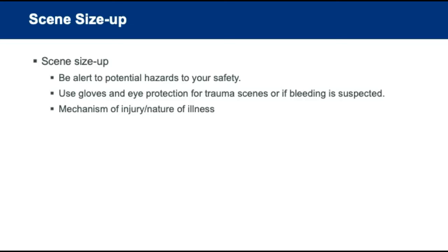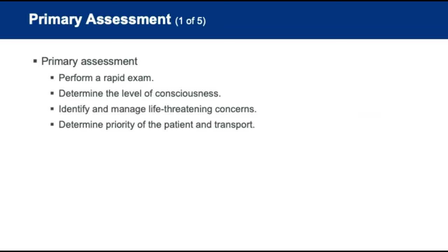Begin treatment by performing a scene size-up to ensure the scene is safe, then determine the mechanism of injury or nature of illness. Perform the primary assessment; when shock is suspected, do a rapid exam. Determine the level of consciousness and identify and treat life-threatening concerns first. If there is massive hemorrhage, apply a tourniquet. Use direct pressure dressings when tourniquets are not feasible. If the patient has life-threatening external hemorrhage, address it first — even before the airway.